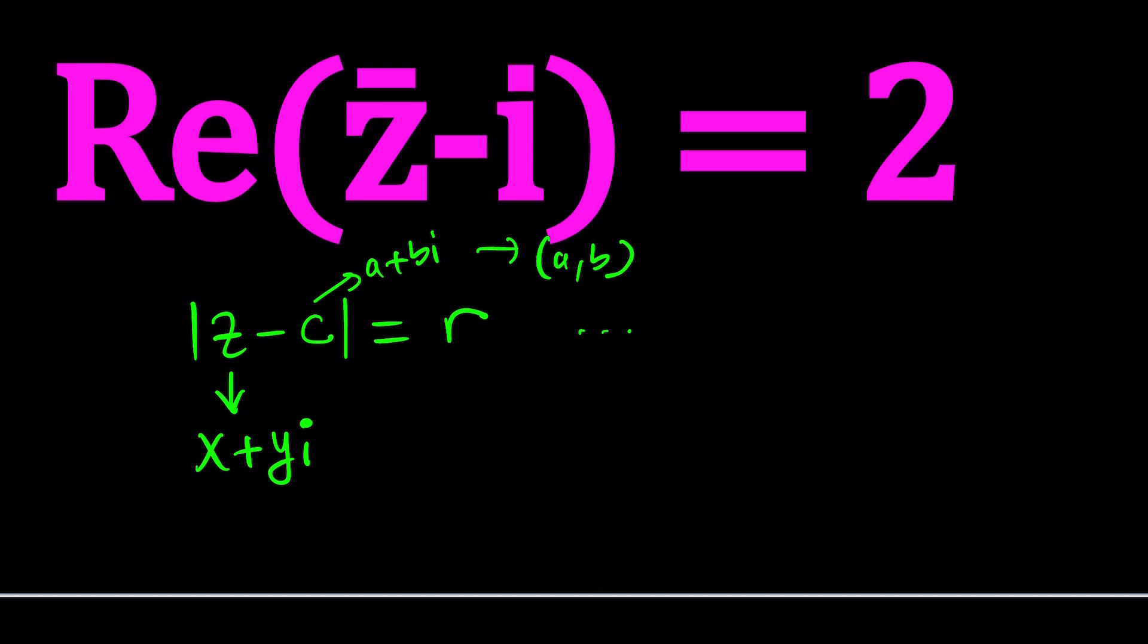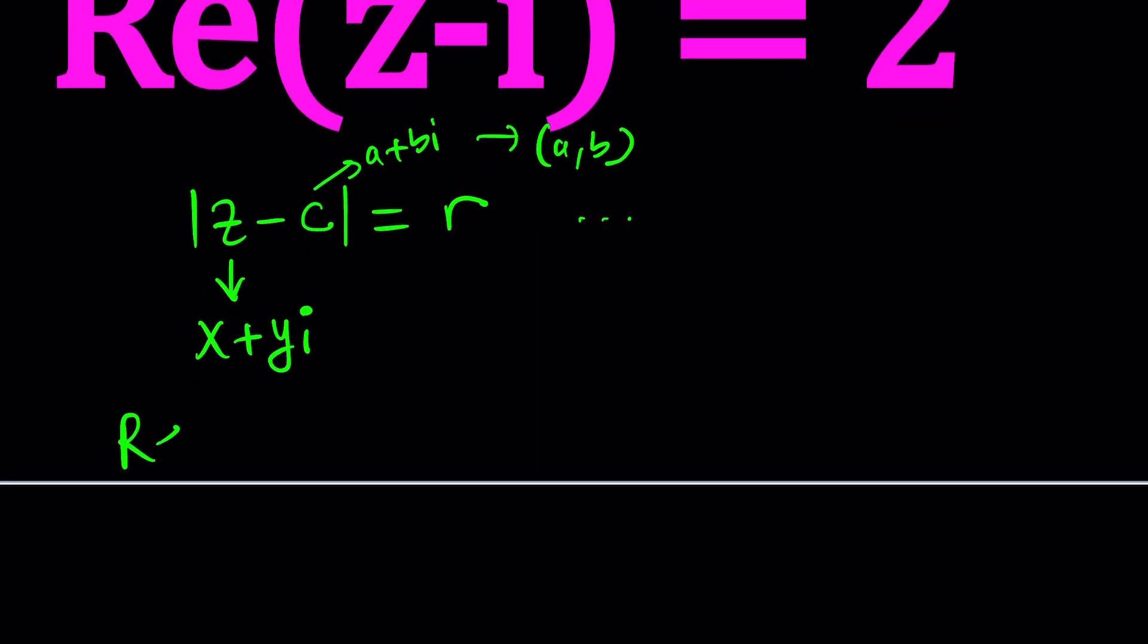Let's go ahead and focus on our equation. So we have this type of equation where the real part of some complex number, the complex conjugate of that number, minus i is supposed to equal 2. What kind of curve do you think the solutions to this equation are going to form? Make a guess. And then what we're going to do is we're going to check our work at the end.